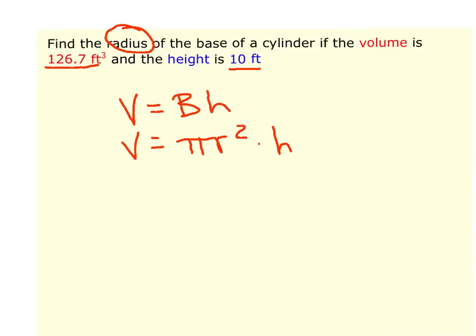So I'm going to plug in what I know. The volume is 126.7, and then I'm going to leave it as πr² because we don't know what r is, and that is multiplied by 10, the height. Now this is just an equation that you're going to solve for r.